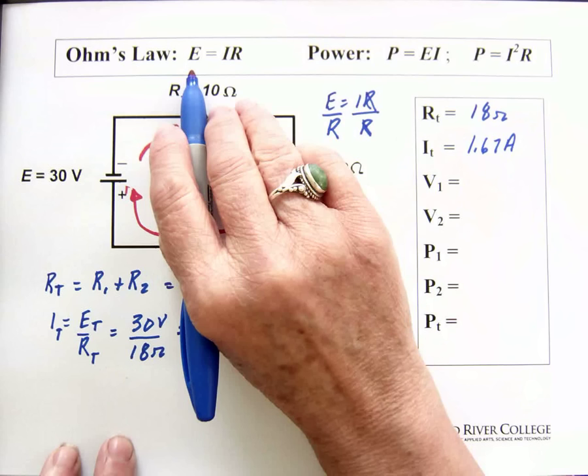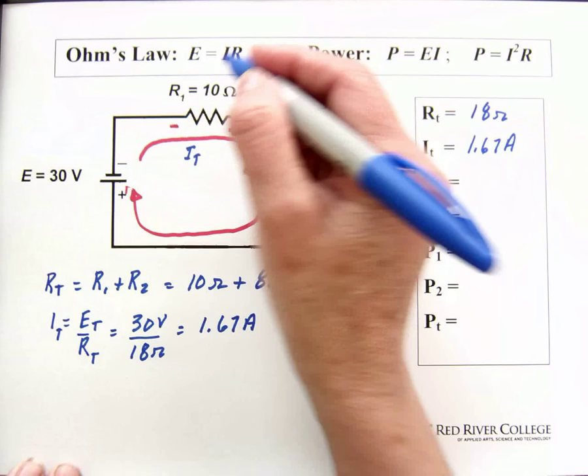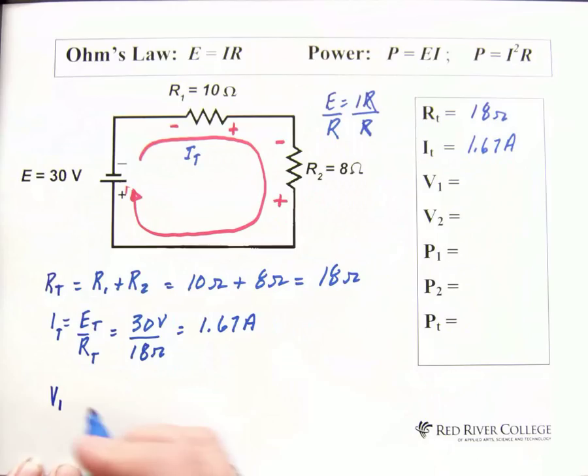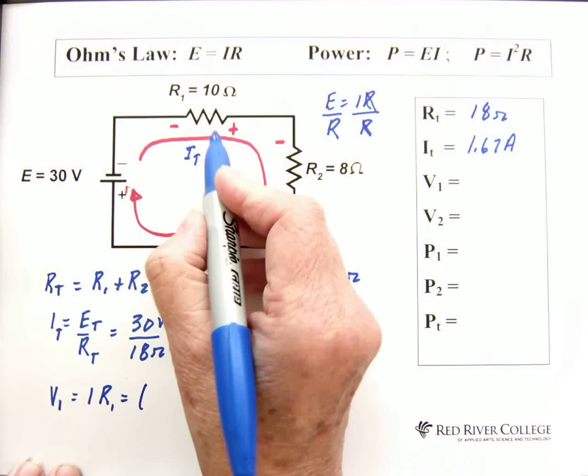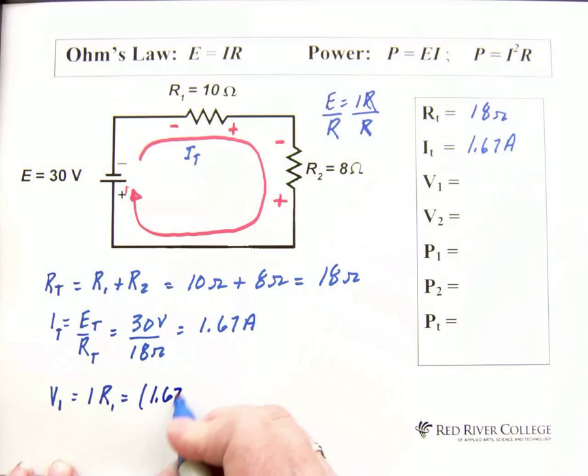Voltage equals current times resistance. And sometimes voltage across a resistor is written as V1. That's the voltage across resistor 1. So, that's IR. And that's the current through resistor 1. So, the current, we know, the current through resistor 1 is 1.67 amps because that's the total current. So, it's 1.67 amps times R1, which is 10 ohms. And we end up with 16.7 volts for voltage 1.